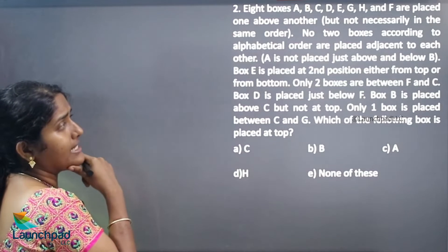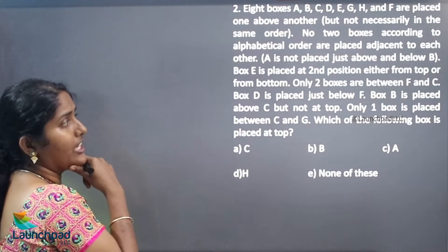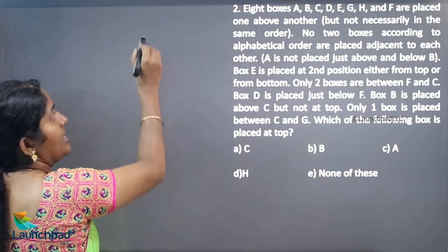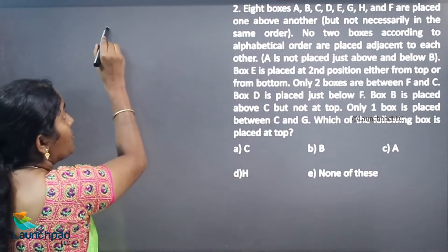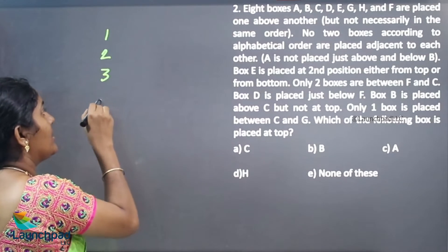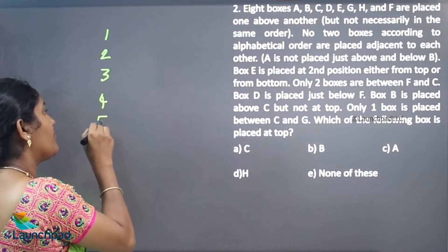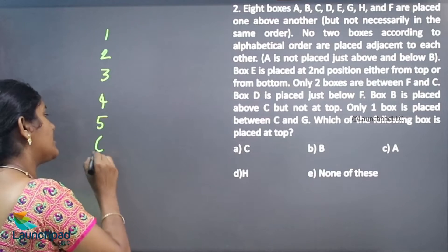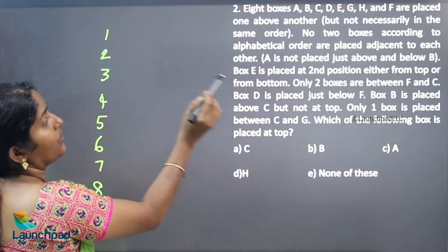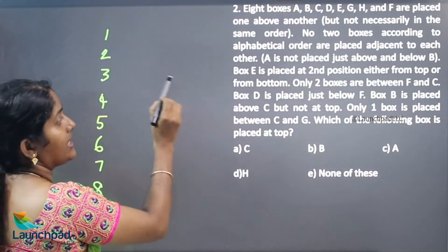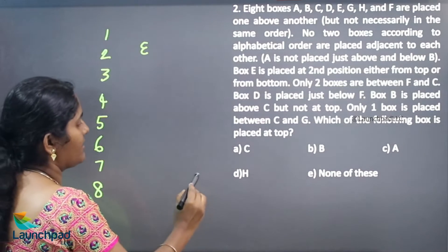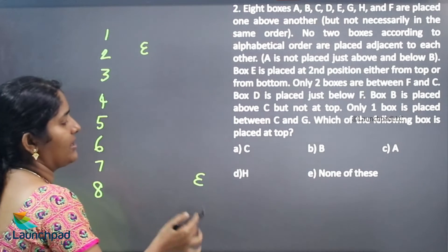No 2 boxes according to alphabetical order are placed adjacent to each other — A is not placed just above or below B, so they are not coming in alphabetical order. Box E is placed at the 2nd position either from the top or bottom. So with 8 boxes, E will be coming at position 2 from top or position 2 from bottom.